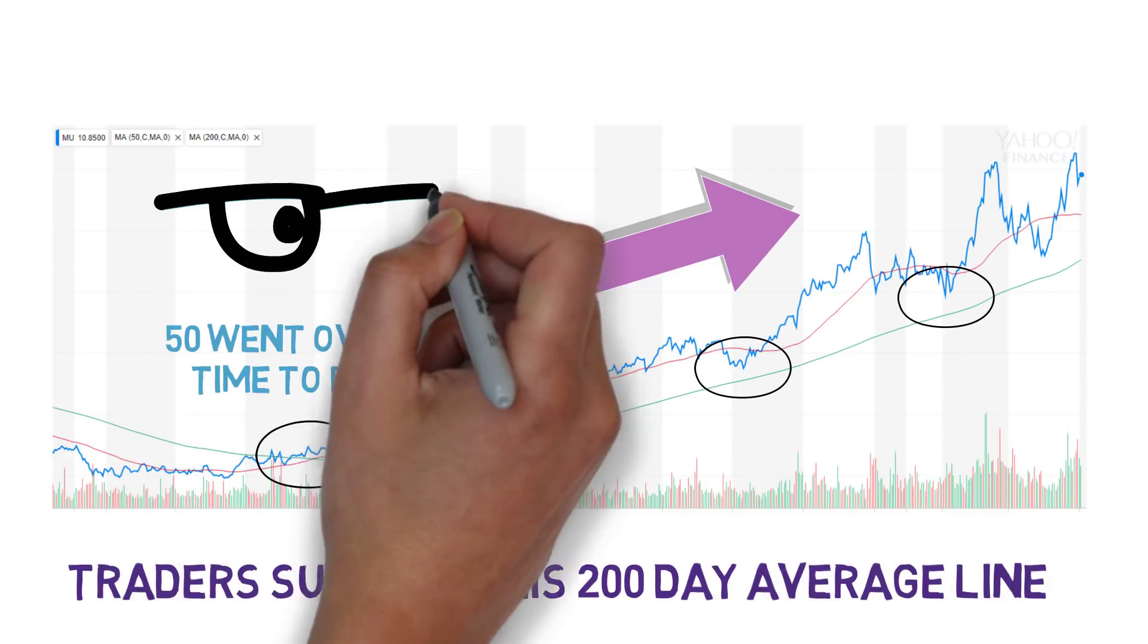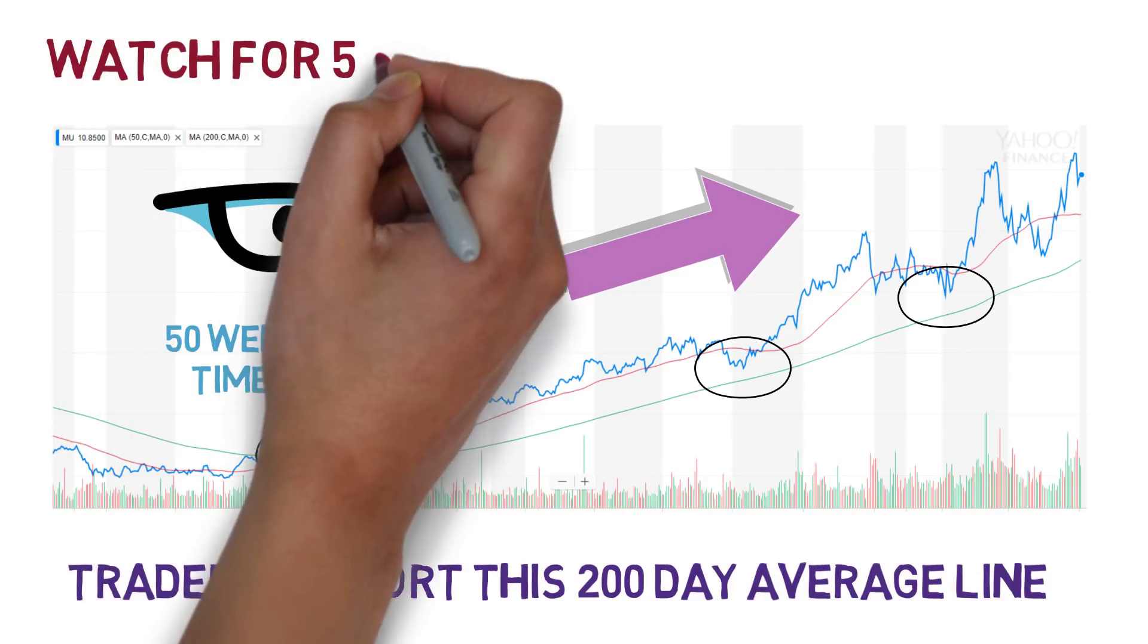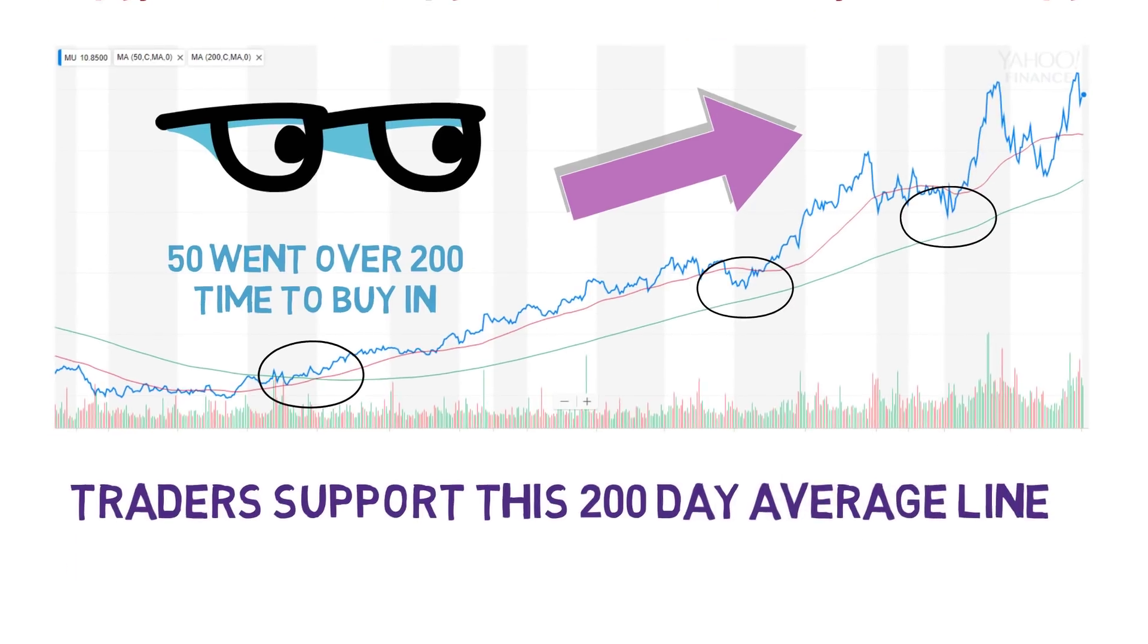If you were holding this stock and see the red 50-day line going down and hitting the 200-day line, that might be a good indication to sell it because the short-term average isn't doing well.